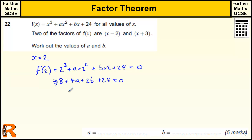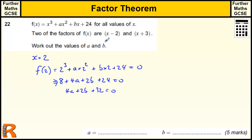So that tells us that 8 plus 24 is 32, so 4a plus 2b plus 32 equals 0. That's one equation we can get from the factor where x equals 2.